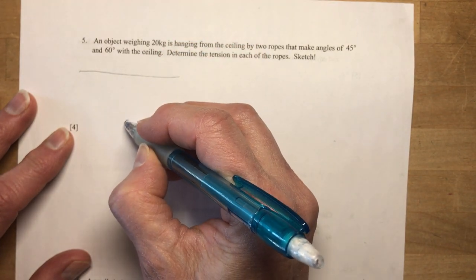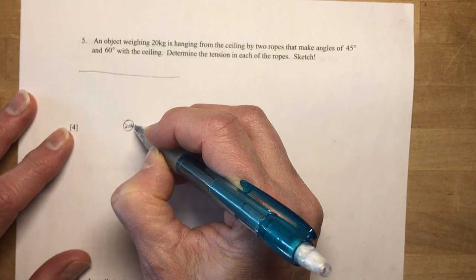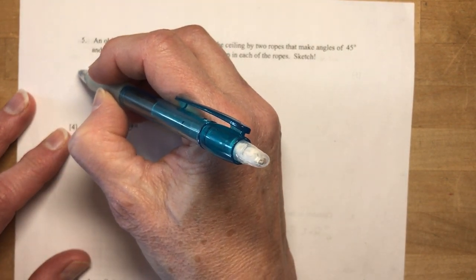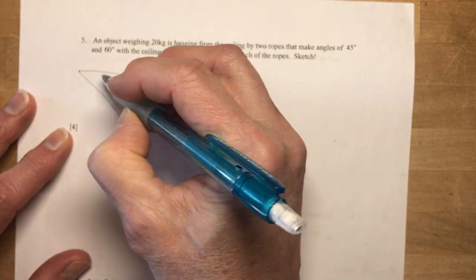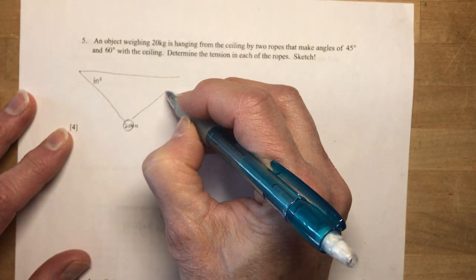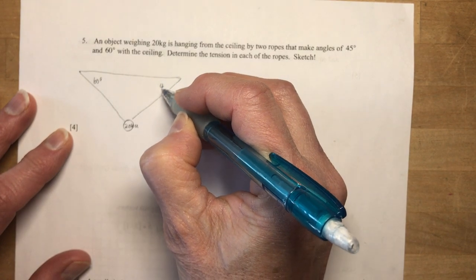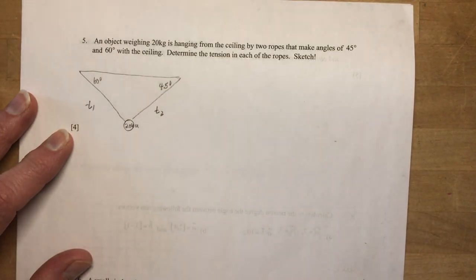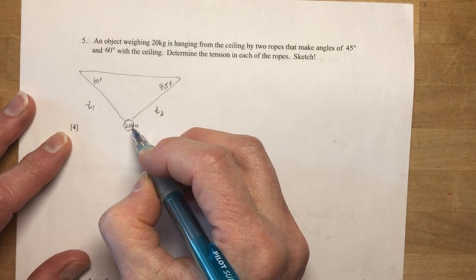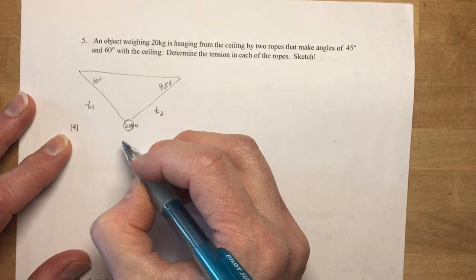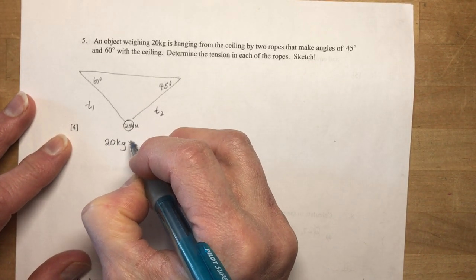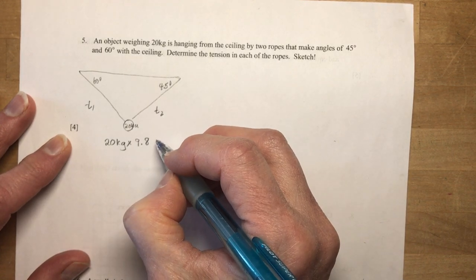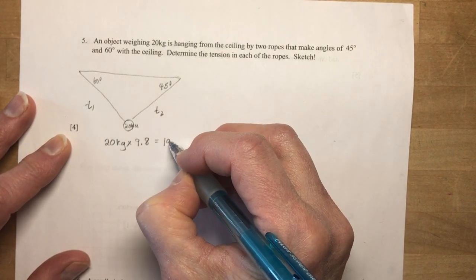20 kilograms. So we have a weight down here of 20 kilograms. And there's one rope that goes 60 and one that's 45. So let's say this is about 60 degrees. This probably looks more like 45. Don't worry what they look like really. Just label them. We'll call this T1 and T2.